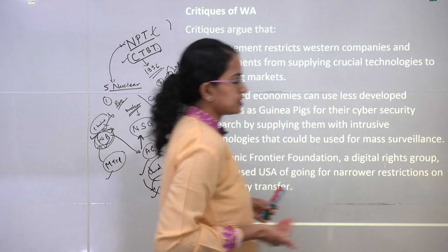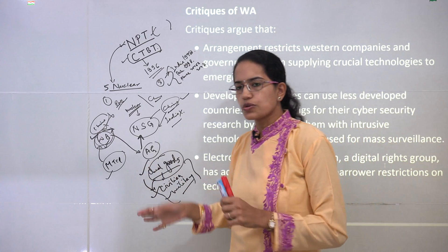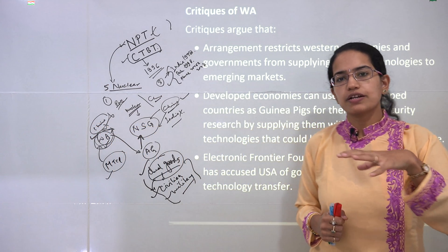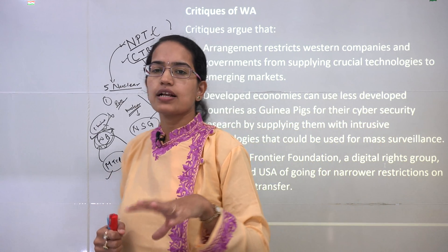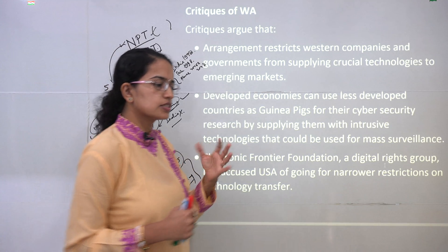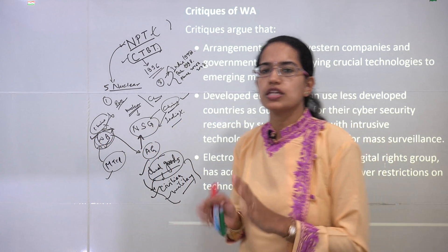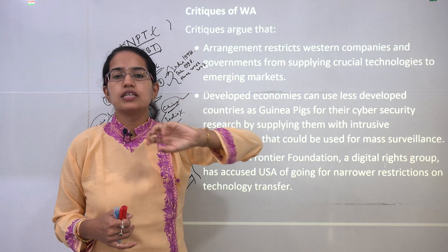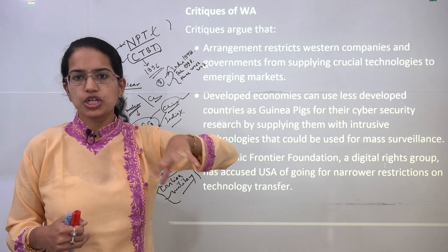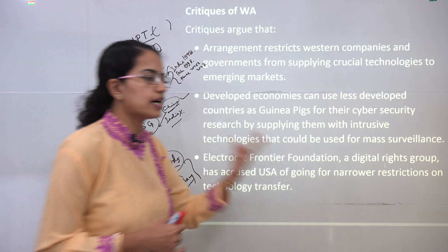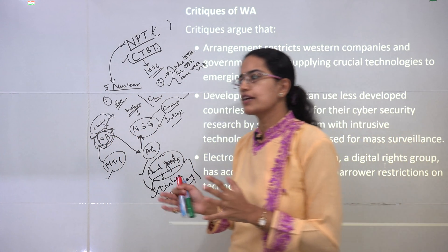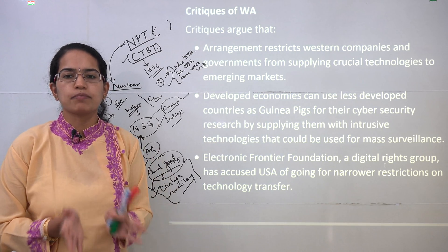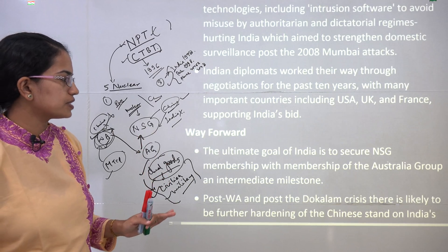Critics argue that for all four nuclear groups, member nations — especially developed ones — gain an undue advantage over developing or less-developed nations, which can be manipulated based on the group's requirements. Another criticism is that the arrangement restricts Western companies from supplying crucial technologies to emerging markets, making it a one-sided group that primarily benefits its own members.